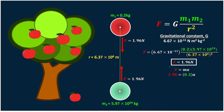If I want to find the acceleration of the apple towards the Earth, we use the formula F equals ma, according to Newton's second law of motion. With force equal to 1.96 and mass of the apple equal to 0.2 kg, dividing both sides by 0.2 gives us an acceleration of 9.8 meters per second squared.